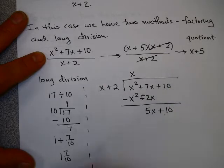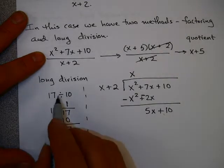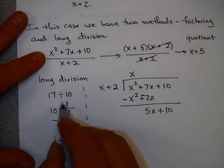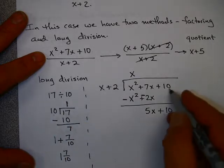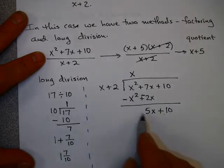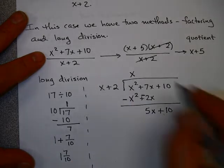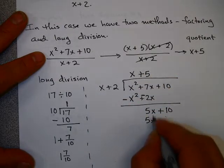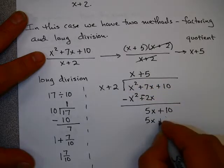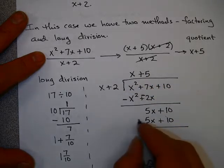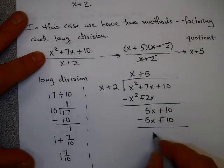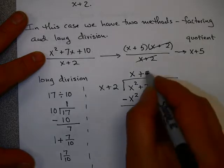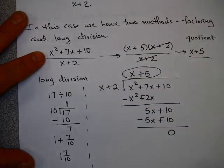Then bring down the 10. If this numerator had been, if this dividend had been larger, like 175, I would have brought down the next item, the same item here. Now ask yourself, what times x goes into 5x? And the answer is 5. 5 times x is 5x. 5 times 2 is 10. And now, if we subtract or change my signs and add, I get 0 and 0. So this is what I get. Notice my quotient is the same as the previous method.